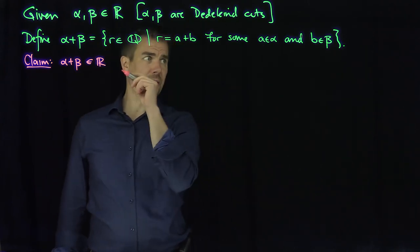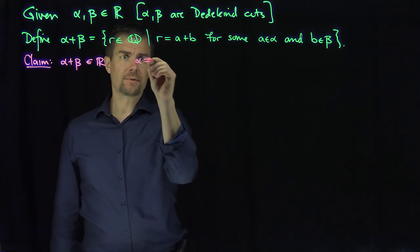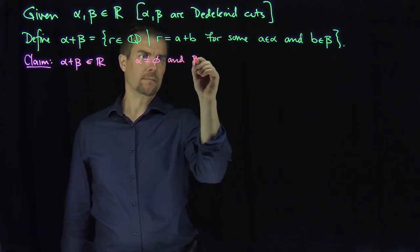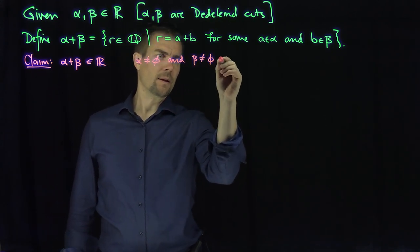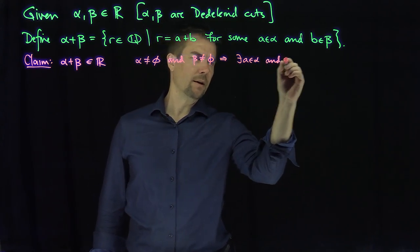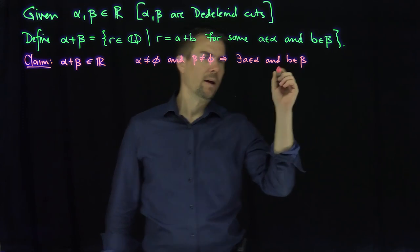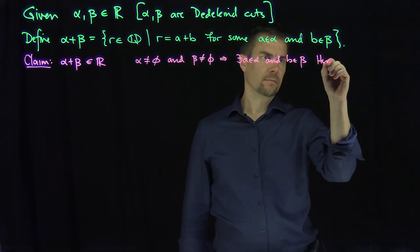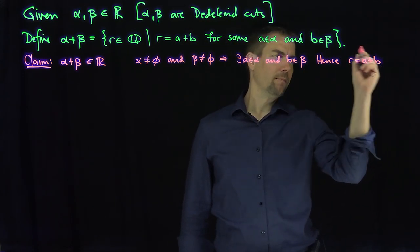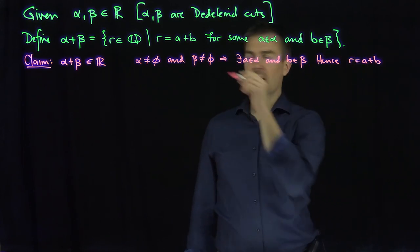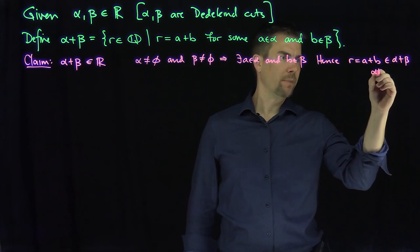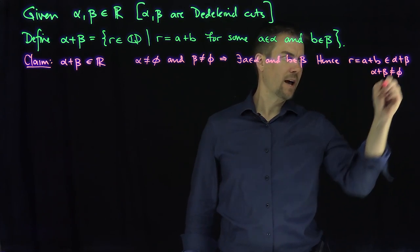I need to show this is not empty. Alpha not empty and beta not empty implies that there exists an a in alpha and b in beta. Hence, if I let r be a plus b, then a plus b is an element of alpha plus beta, and so alpha plus beta is not empty.